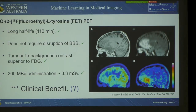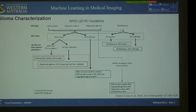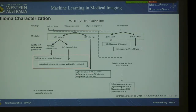A 200 megabecquerel administration translates to roughly a 3.3 millisievert whole body effective dose for the patient, which is quite reasonable. So what is the clinical benefit of FET PET? In 2016 the World Health Organization updated their guidelines for glioma typing, including molecular markers such as the IDH mutation status and 1p19q co-deletion status. Conventional FET PET parameters are able to significantly differentiate between IDH mutated gliomas and IDH wild type gliomas.